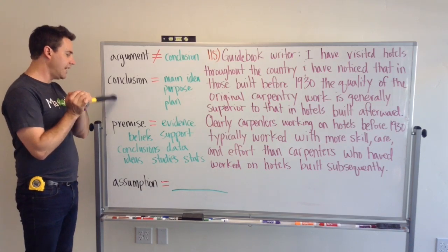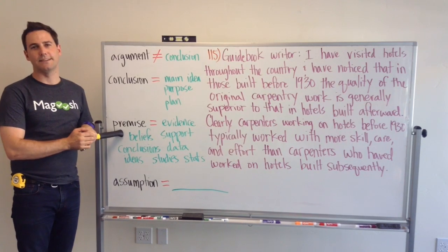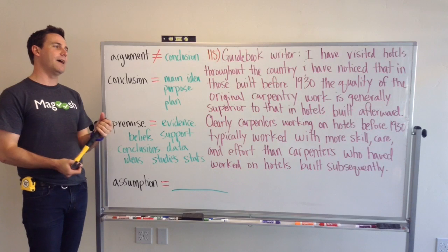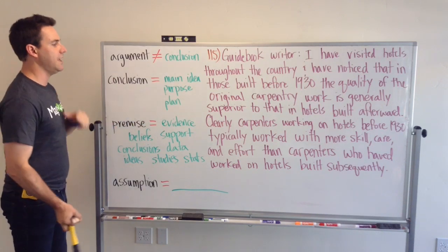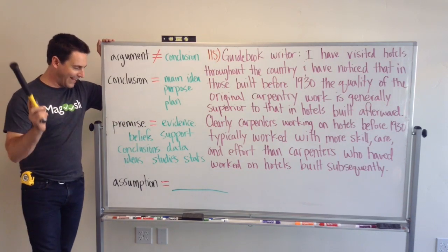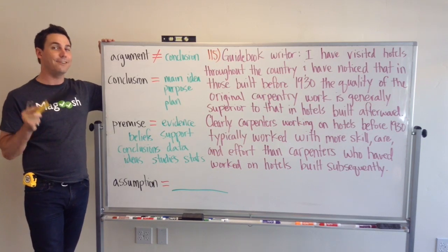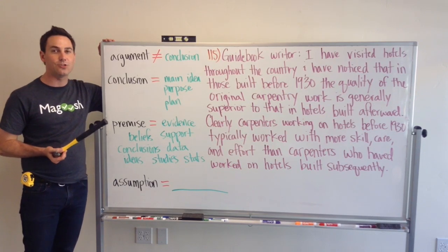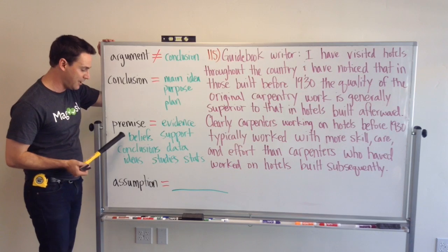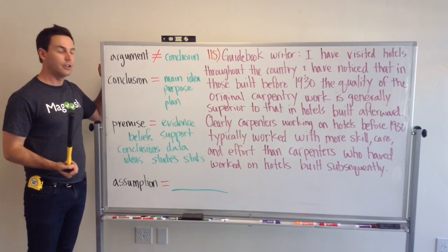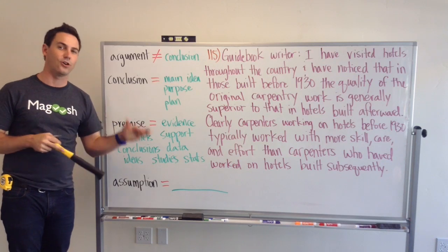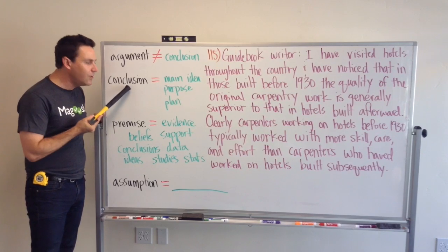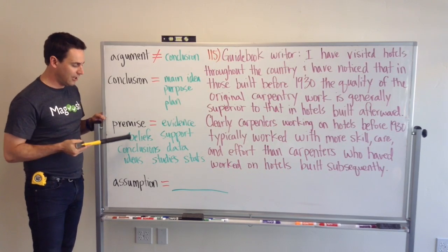A conclusion is nothing without premises. Premises are the support — they're the things that the author gives you to help you believe the statement that is the conclusion. Almost anything can be a premise, and some things are better premises than others. That's why if you're looking to weaken or strengthen an argument, go to the premises. Think about how you can alter the premises to strengthen or weaken the conclusion. When you're weakening and strengthening an argument, you're not actually doing anything to the conclusion — you're changing the premises.